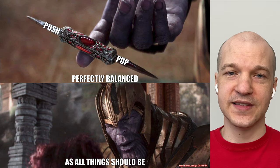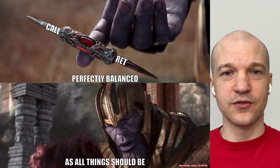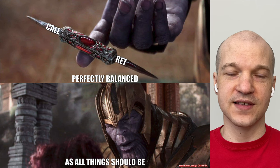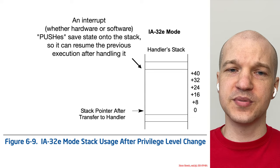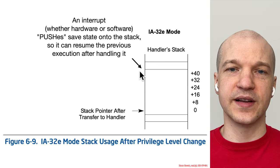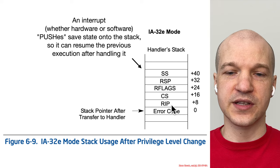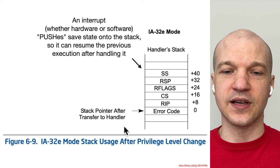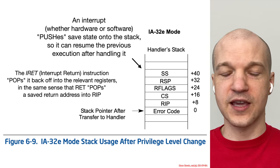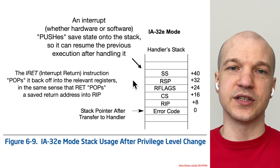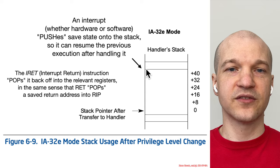Just as push-pop and call-ret are balanced pairs of assembly instructions, here we have INT and IRET — perfectly balanced as all things should be. When an interrupt or exception occurs, the hardware pushes state information onto the stack. After the handler completes, the IRET instruction — interrupt return — pops that information back off the stack and resumes execution wherever it was pointing when the interrupt occurred.